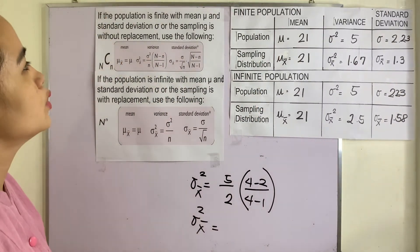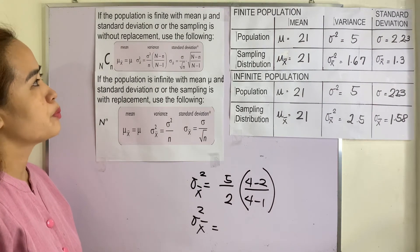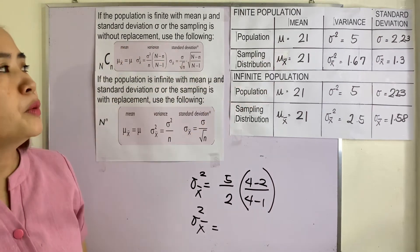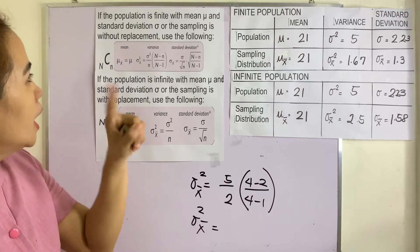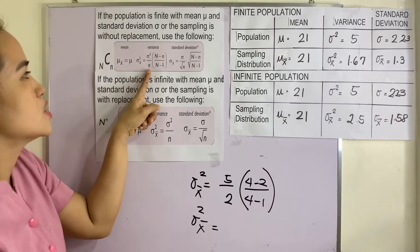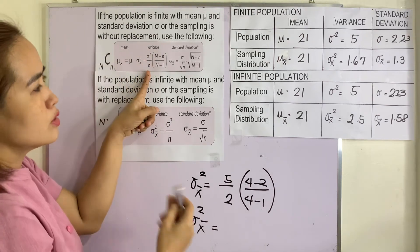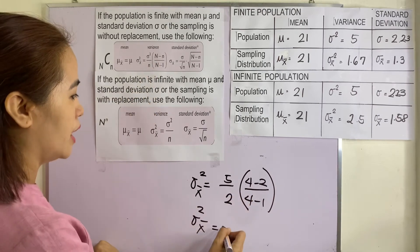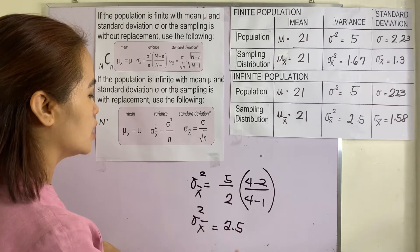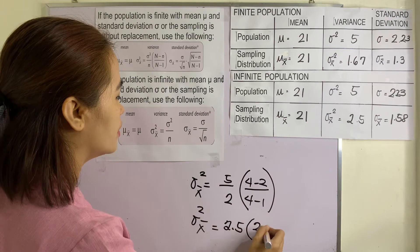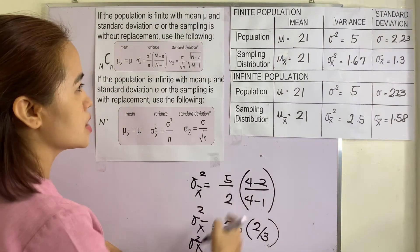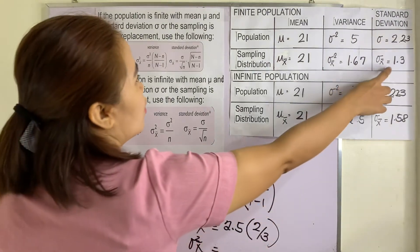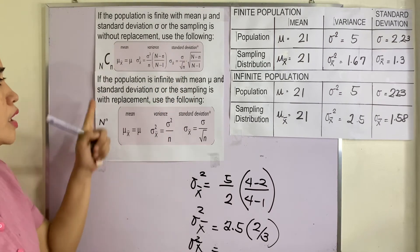Based on the data, we can conclude that if the population is finite with mean mu and standard deviation sigma, or sampling is without replacement, the mean of the sampling distribution equals the population mean. For the variance, the formula uses the population variance — which is 5 — with small n equal to 2 and big N equal to 4, giving 2.5 times 2 over 3, which equals approximately 1.67, and the standard error is 1.3.